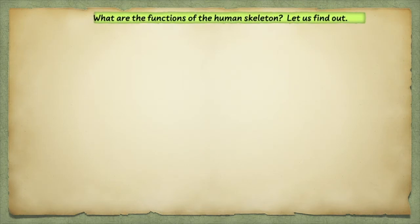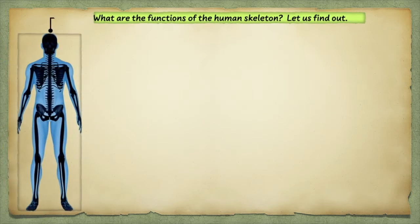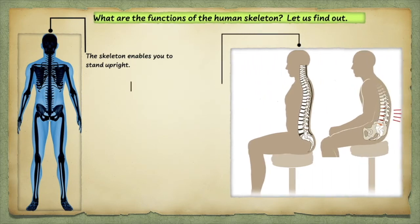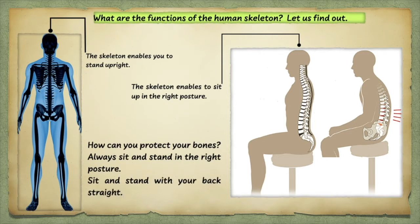What are the functions of the human skeleton? Let us find out. The skeleton enables you to stand upright. The skeleton enables you to sit up in the right posture. How can you protect your bones? Always sit and stand in the right posture — sit and stand with your back straight.